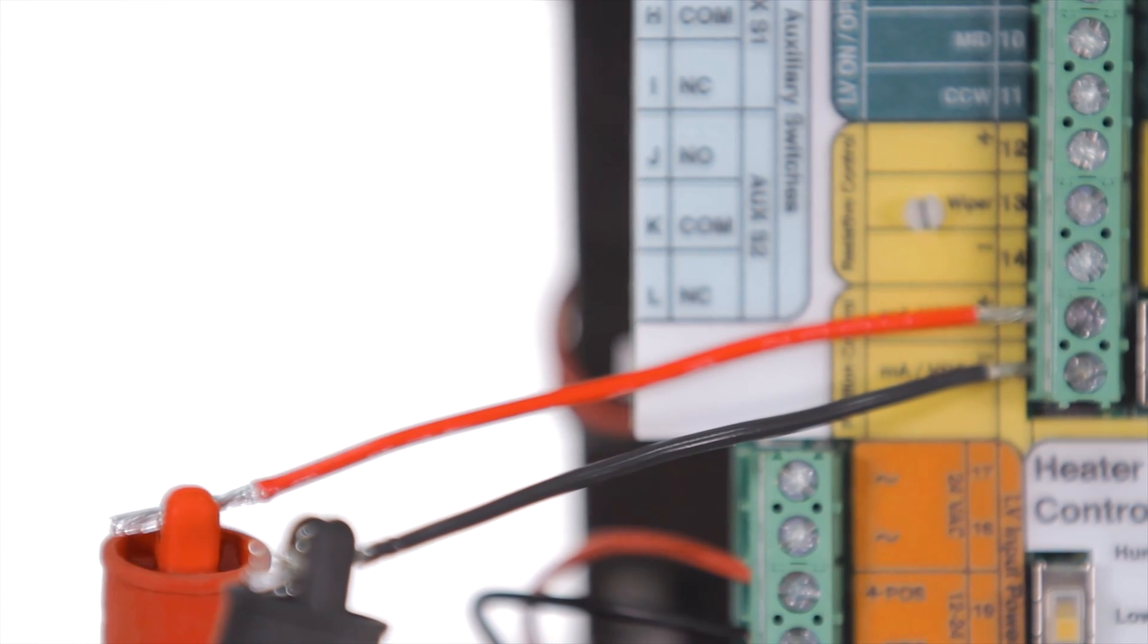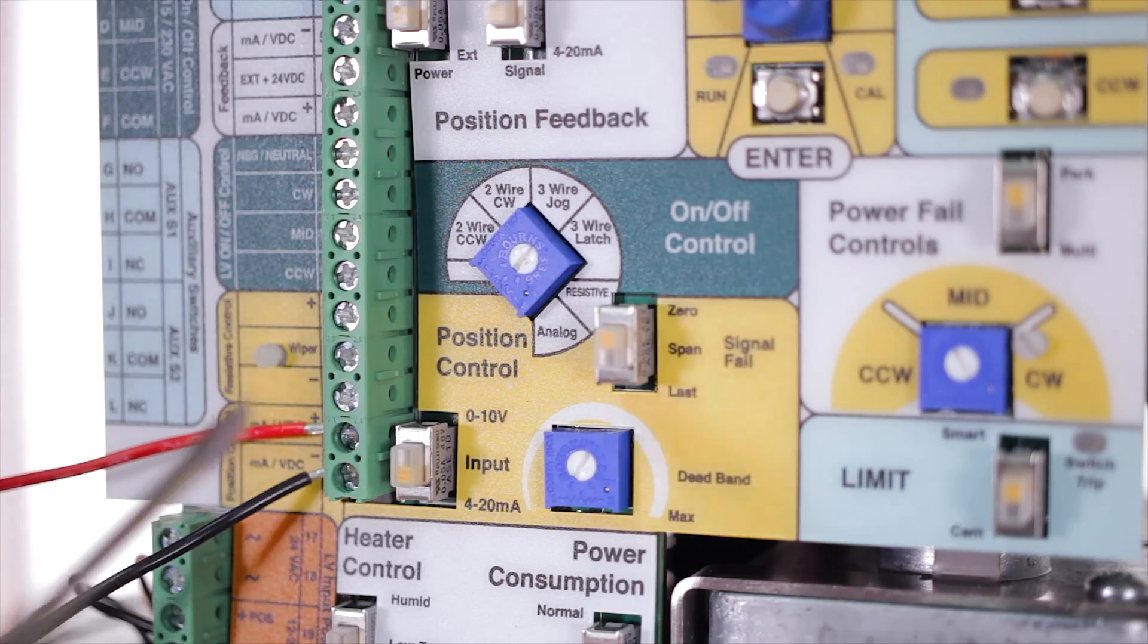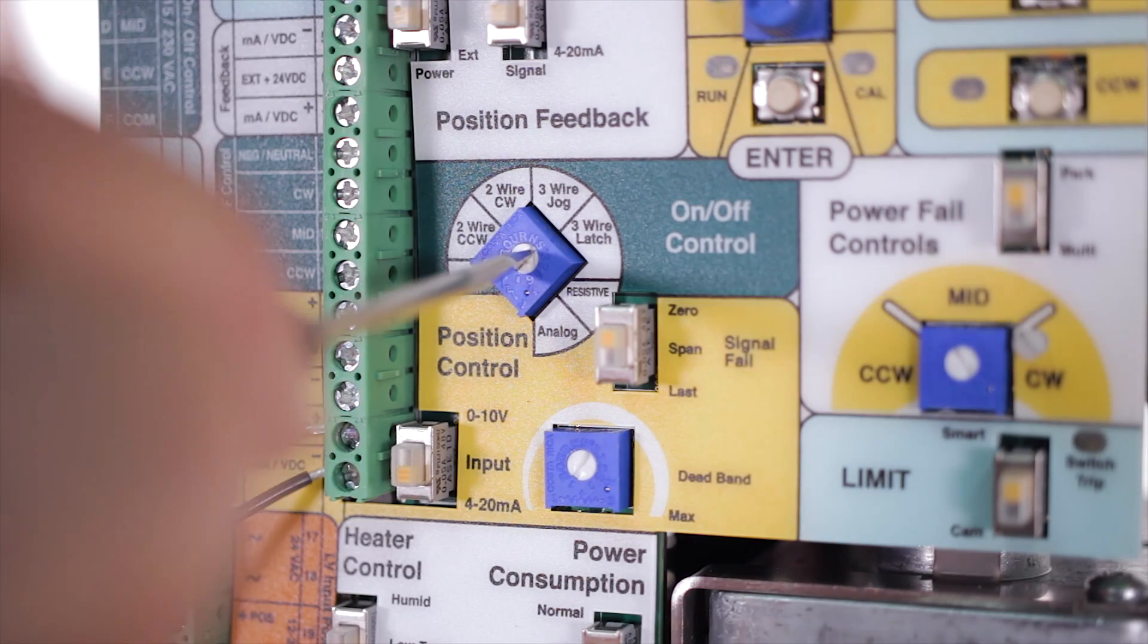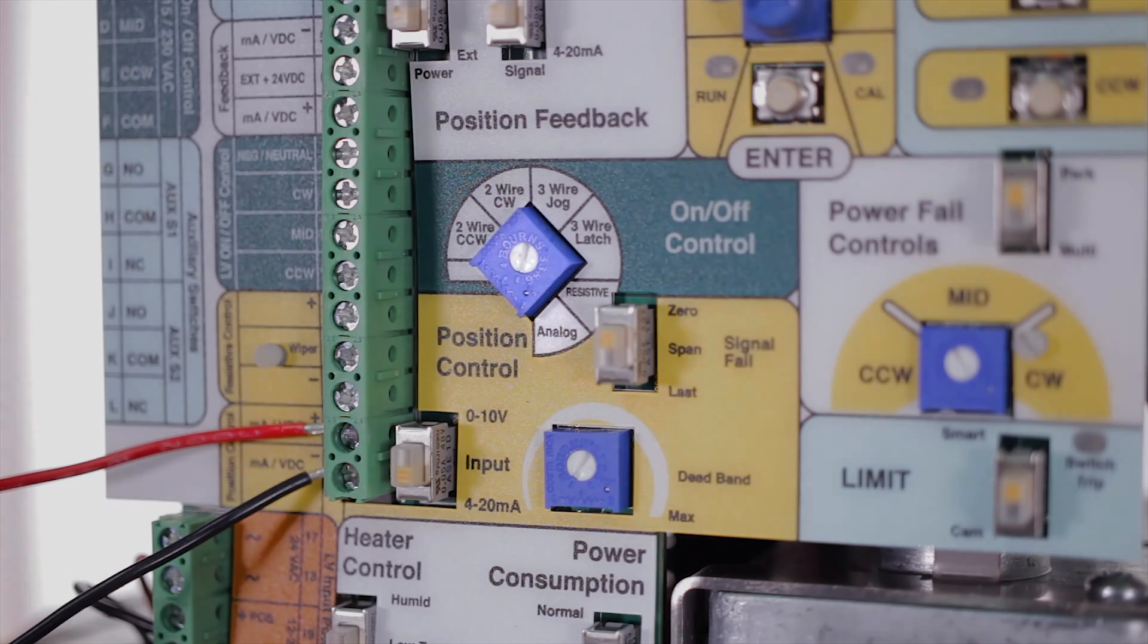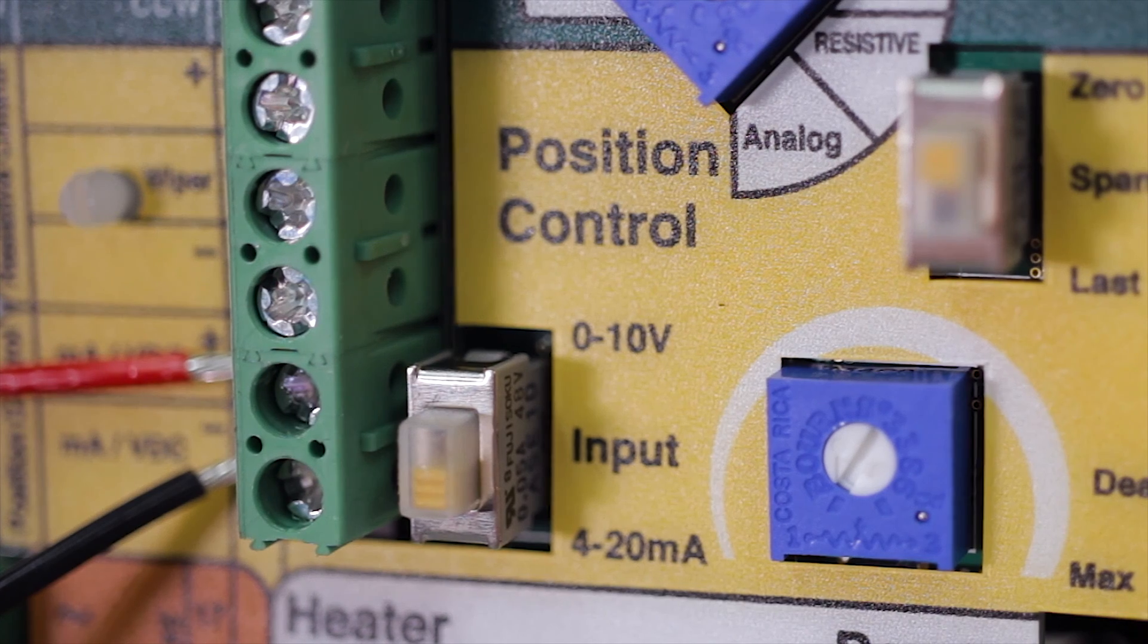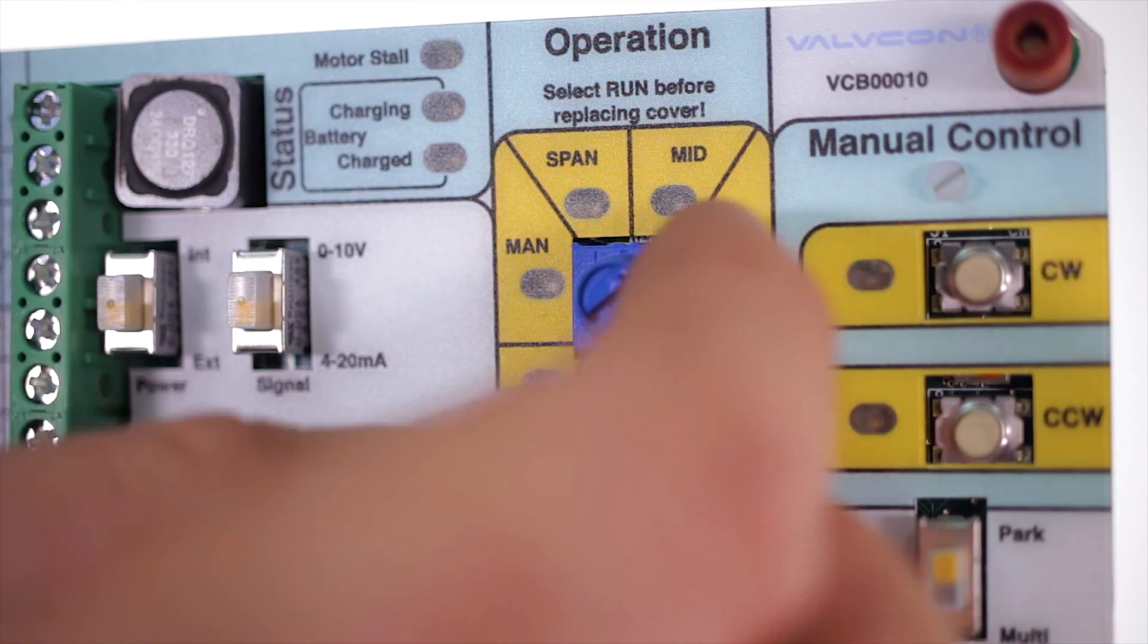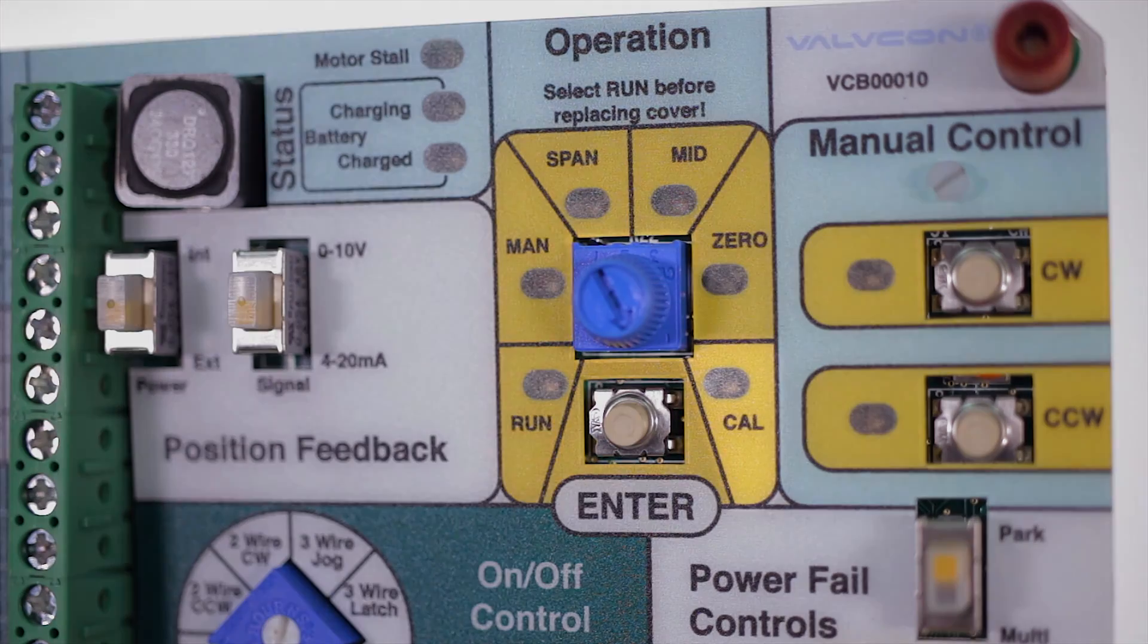We're using an analog signal but it also has modbus and discrete signal capabilities. Turn the on off control mode selector switch all the way clockwise to the analog setting. Make sure that your position control switch is on the 4 to 20 milliamp setting. Now turn your operation mode selector switch all the way clockwise to the calibrate setting.